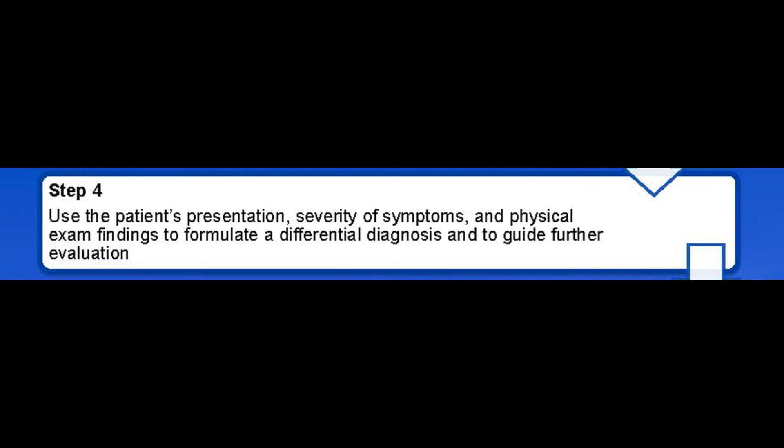Step four is to use the patient's presentation, severity of symptoms, and physical exam findings to formulate a differential diagnosis and to guide further evaluation with laboratory, imaging, and procedural tests. It is important to clarify details regarding the onset of symptoms, such as abrupt versus gradual, timing in relation to food or frequency, nature of emesis such as undigested or partially digested food, presence of bile and volume, and associated symptoms such as abdominal pain, weight loss, early satiety, bloating, or change in bowel habits.